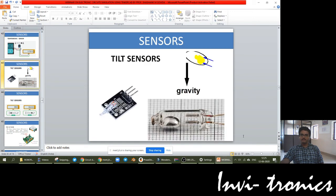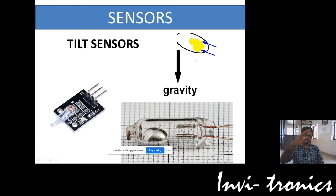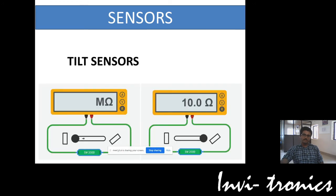Next is the tilt sensor. If you want the orientation to be proper — for example, if the orientation is tilted this way or that way, you must get a signal saying the angle is increased or decreased. For this kind of information, you use a tilt sensor. Mercury is inside it — when the mercury gets in contact with the two terminals, it is in contact only when there is a tilt.